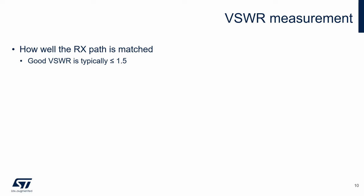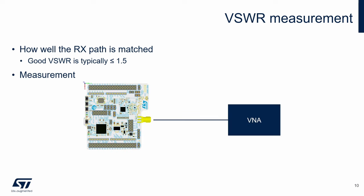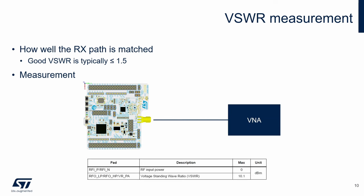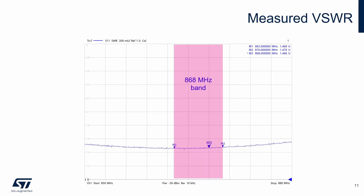The standing wave ratio measurement indicates how well the receiver path is matched. A good value is typically below 1.5. The measurement of the standing wave ratio is quite easy — the vector network analyzer is connected directly to the SMA connector of the board, and the STM32WL is set to receiver mode. The RF input power of the receiver should be below 0 dBm; in our example, the power from the VNA is −30 dBm. Here is the measured standing wave ratio of our board — it is around 1.5 in the whole band, and the exact values are listed here.